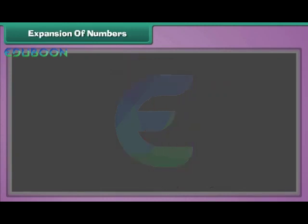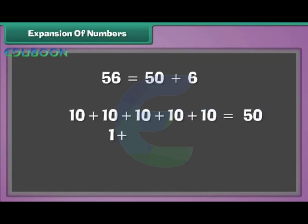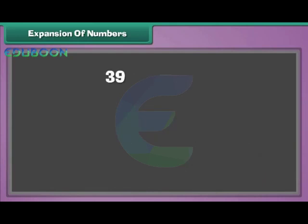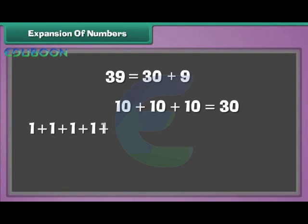Expansion of numbers. Fifty-six can be written as fifty plus six, meaning there are five tens and six ones in fifty-six. Similarly, thirty-nine can be written as thirty plus nine, meaning there are three tens and nine ones in thirty-nine.